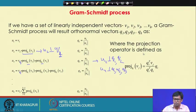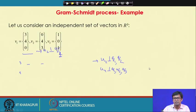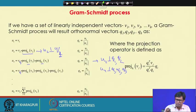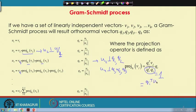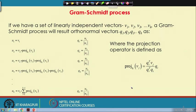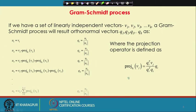The projection operator is defined as: projection of vj onto Qi equals (Qiᵀ vj) Qi. Since Qi is a unit vector, Qiᵀ Qi = 1, so the projection operator gives a scalar (Qiᵀ vj) multiplied by the direction Qi — representing the magnitude of the projection along the direction of Qi.